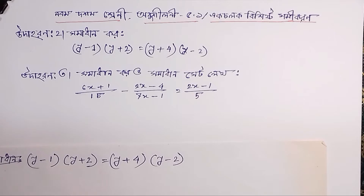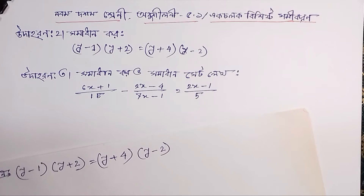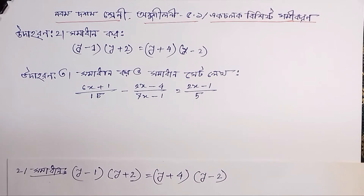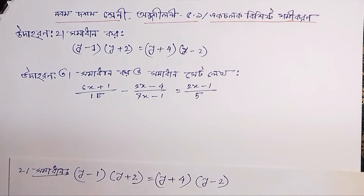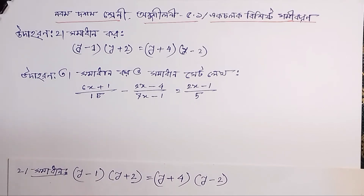Assalamualaikum, priyo bondhara, kiamun asa? Shabhai asakuri shabhai onek bhalwa asa bondhara. We will solve problem numbers 1, 2, and 3 from the exercise with 1910, 510, and 420 sriani.